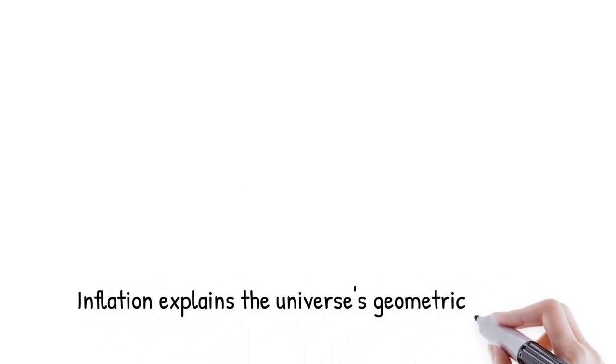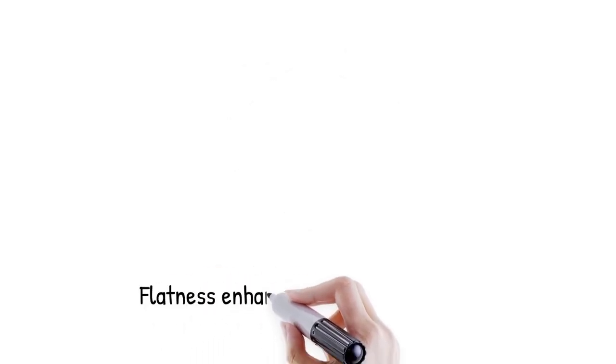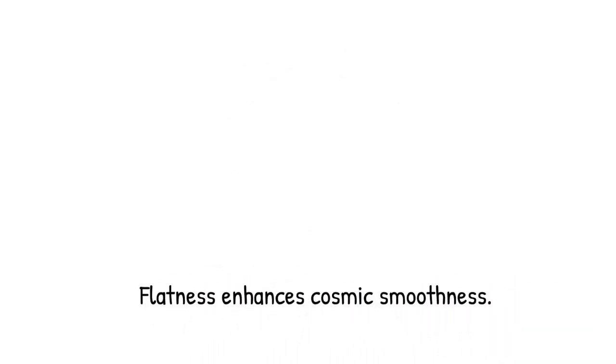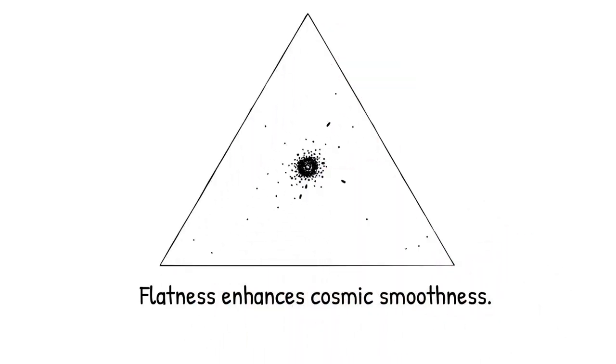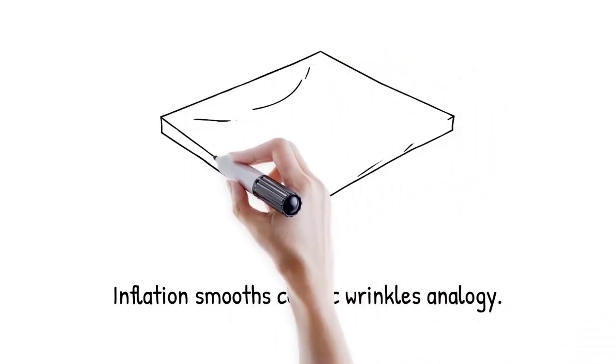Inflation doesn't just solve the horizon problem. It also explains why the universe appears geometrically flat in general relativity. Even small curvature deviations grow over time unless precisely balanced. Inflation smooths out any initial curvature, driving the universe towards spatial flatness, which is consistent with the observed uniformity in large-scale structure. Flatness amplifies the apparent smoothness, minimizing variations in geometry. This dual solution makes inflation a compelling framework. Example: measurements of the angles in the cosmic triangle formed by distant galaxies show a sum of 180 degrees, indicating a flat geometry. Analogy: It's like smoothing out wrinkles on a sheet by stretching it from all sides until it looks perfectly flat.